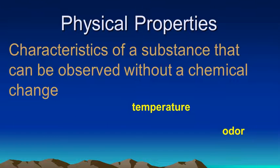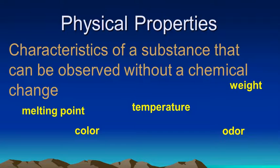Or how something smells. Or its color. Or its weight. Or its melting point. And so those are properties that we can just observe, we can see, we can sense those without actually changing the identity of the substance.